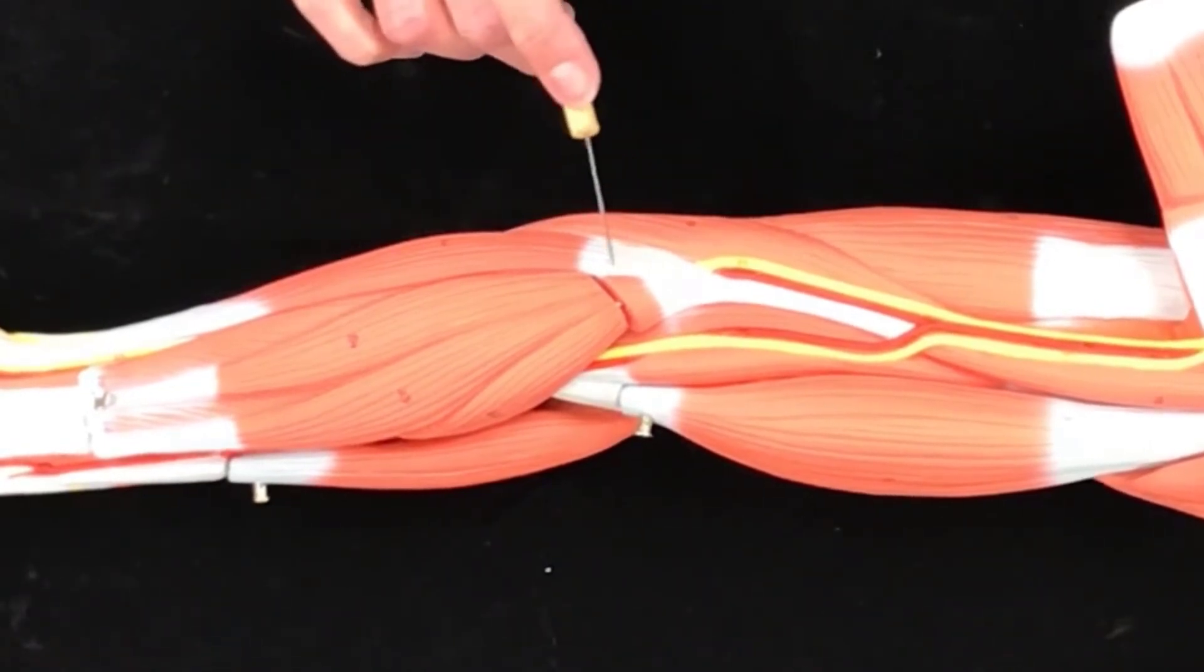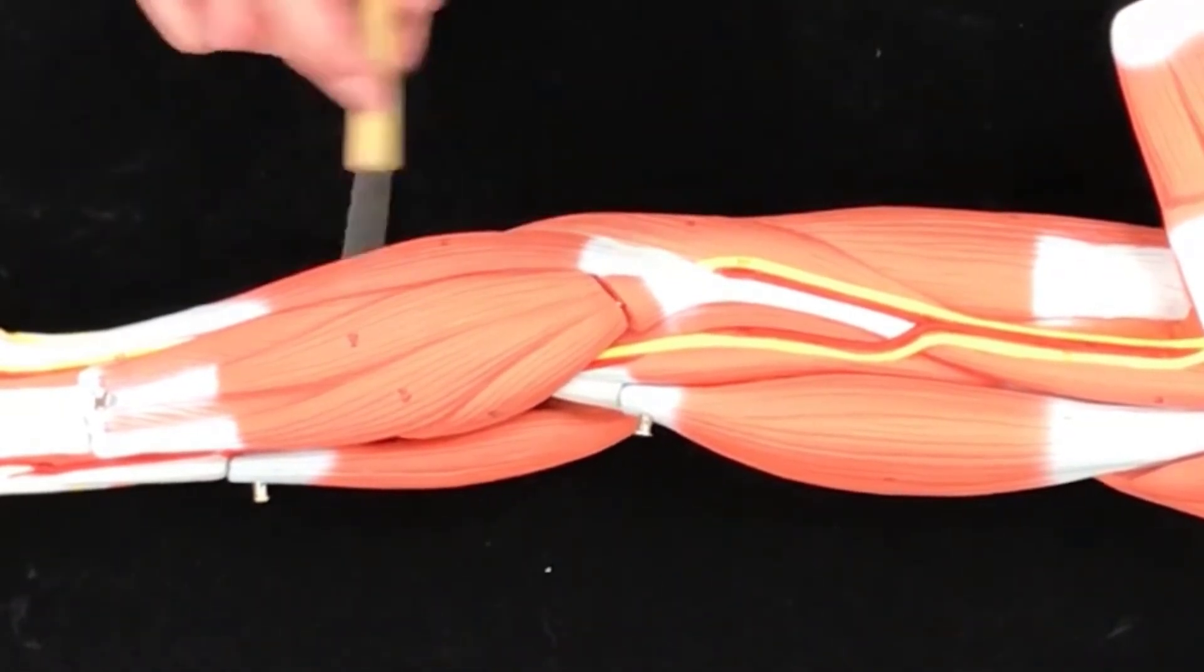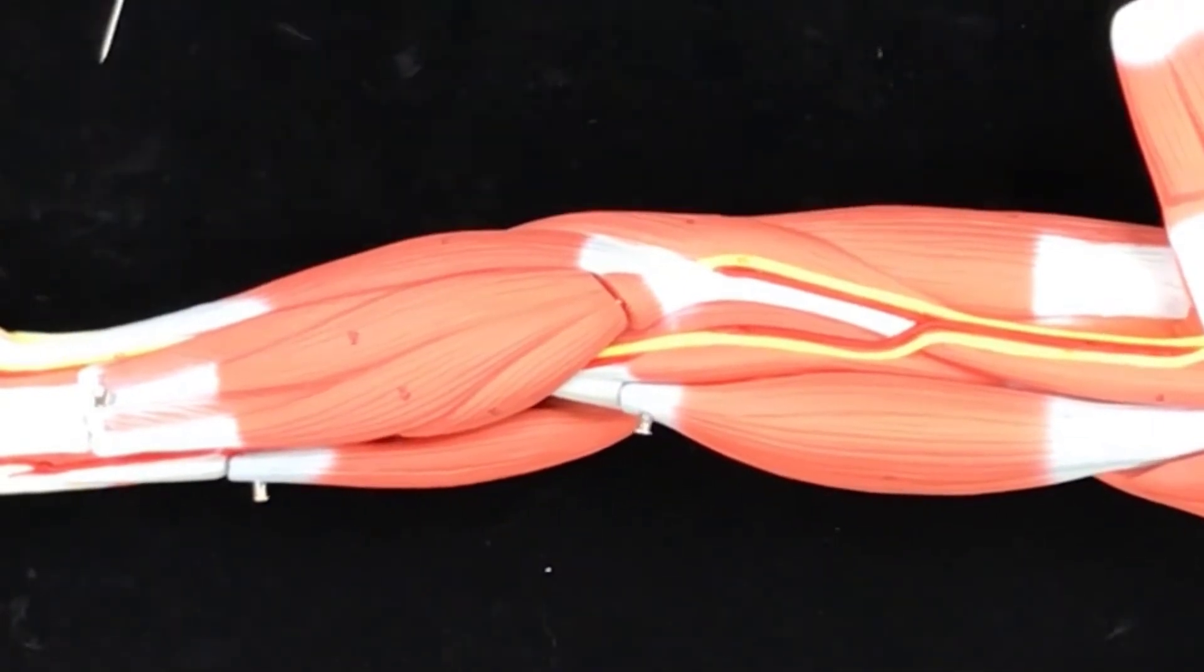And the reason why is it's one of the more anchored veins. So it's more stable, less likely to roll. But obviously we could use any of the surface veins for that.